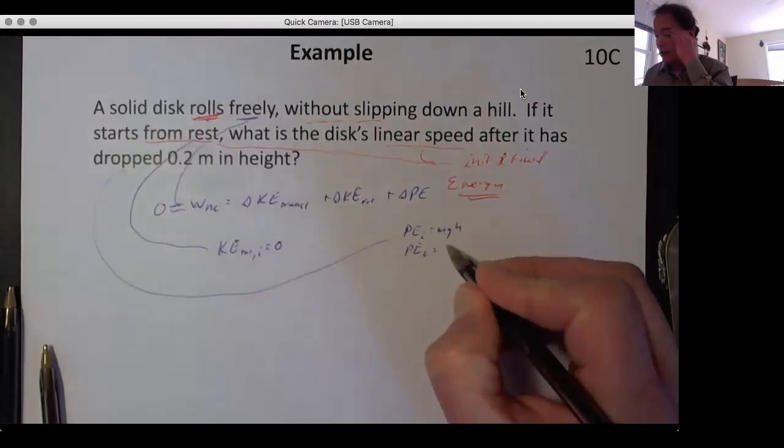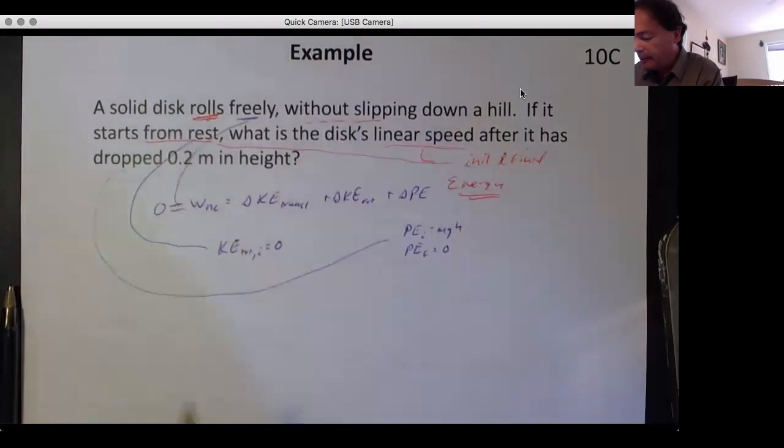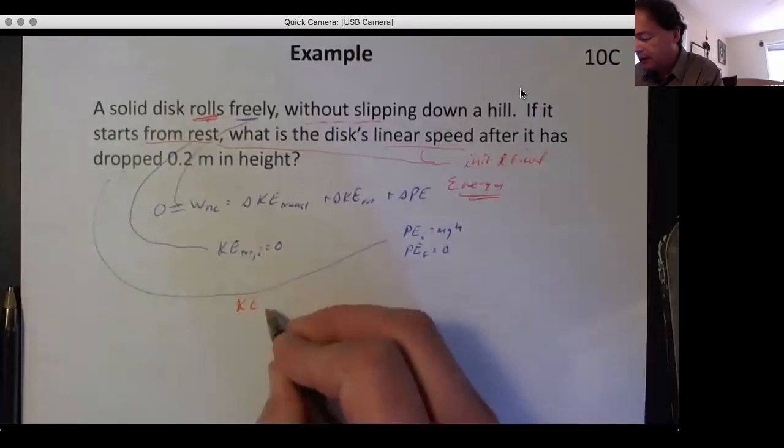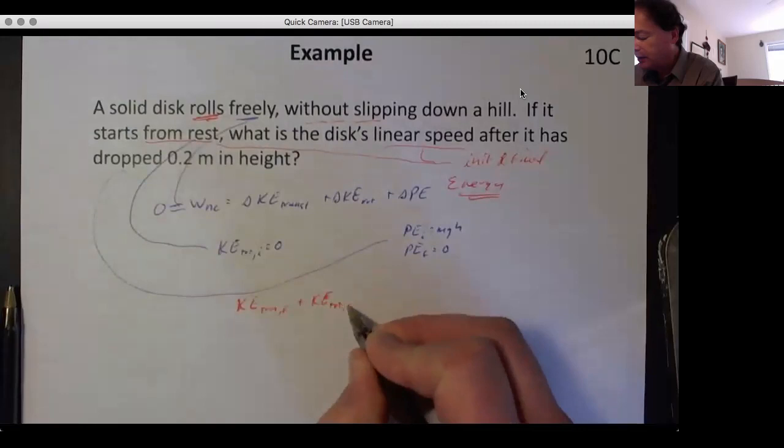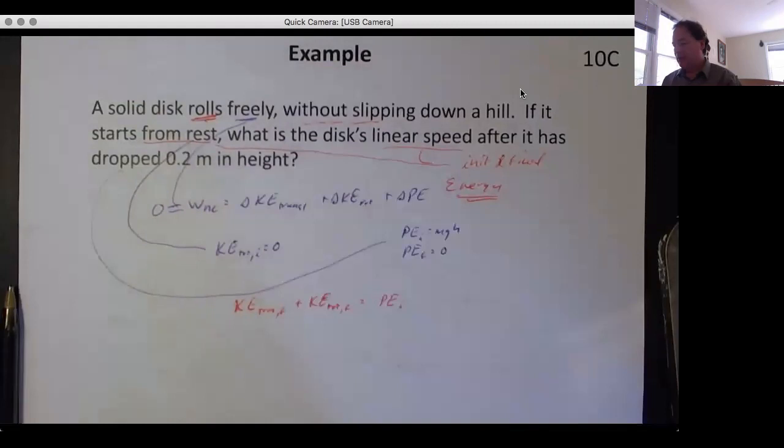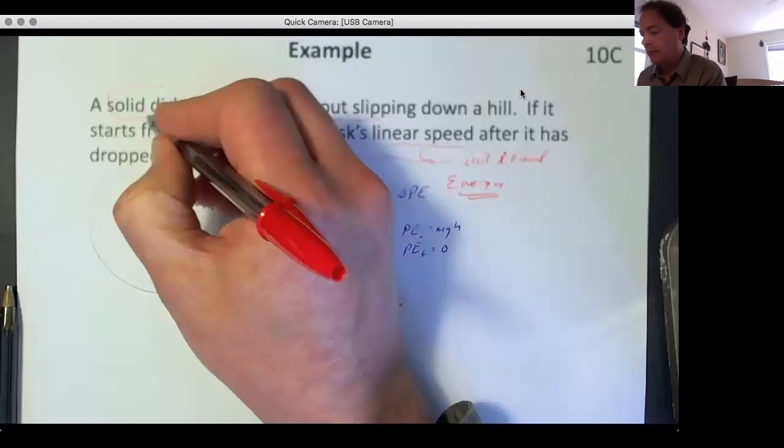KE translational final plus KE rotational final is equal to PE initial. And we can put in some formulas for this. We've got a solid disk, so we've got to write down what the kinetic energy is for that. We can do that: it's ½m(v_cm)²,